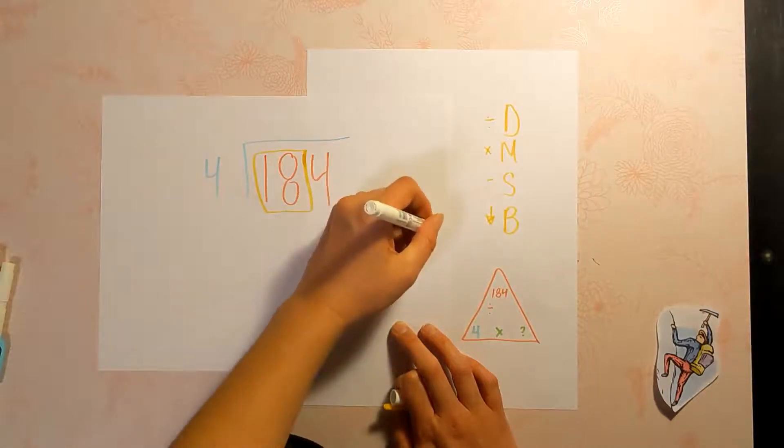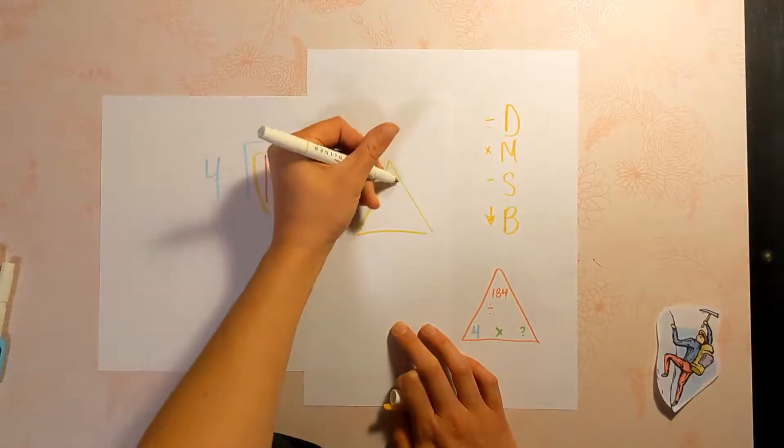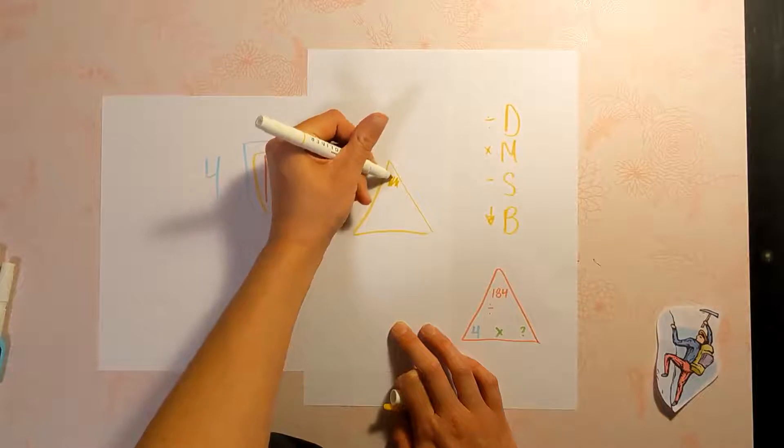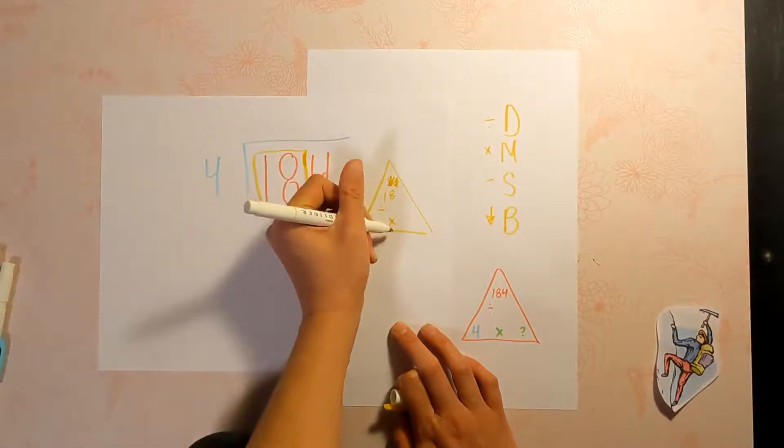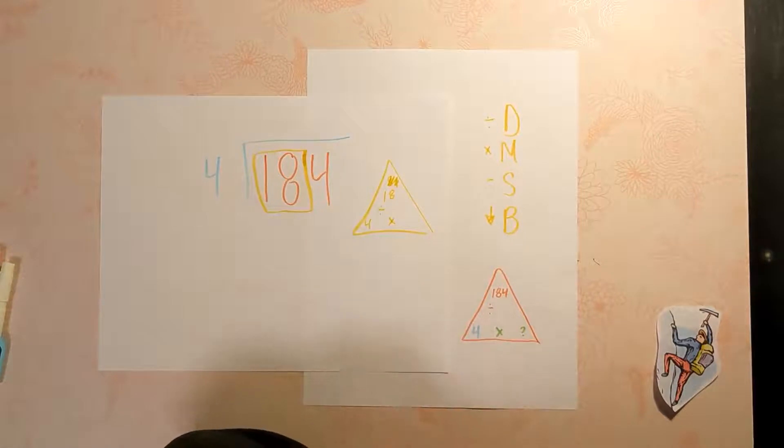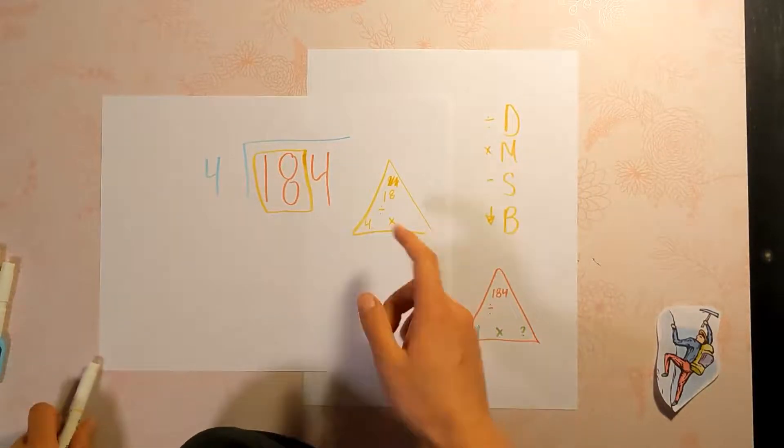So that's like this: 18 divided by four. In other words, four times what equals 18? Well, you can't do four times something equals 18, but you can get close.